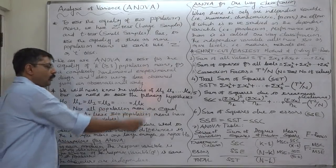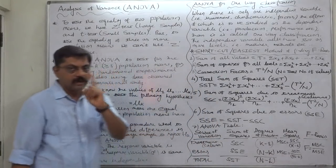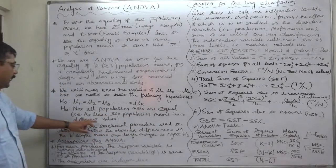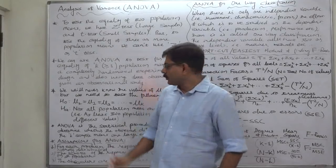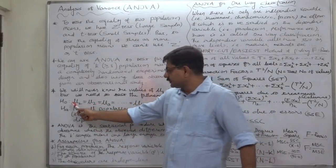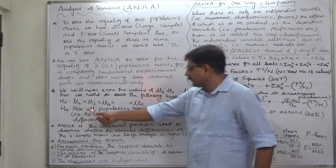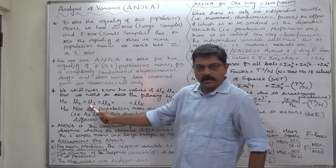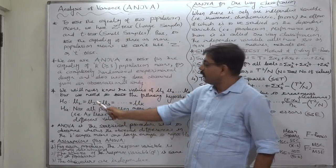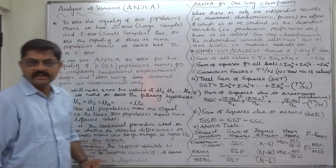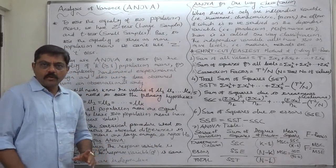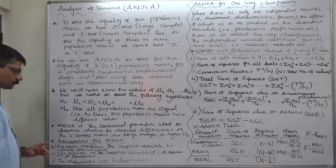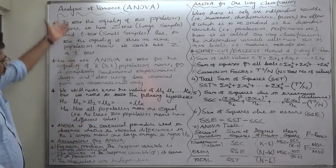On the other hand, the alternative hypothesis will be: not all population means are equal. Mind the words — not all population means are equal — meaning at least two population means have different values. Suppose there are three populations and null hypothesis is mu-one equals mu-two equals mu-three, but alternative hypothesis is not all population means are equal. That means at least two of these three are different: either mu-one and mu-two are not equal, or mu-one and mu-three are not equal, or mu-two and mu-three are not equal. It is not necessary that all the means are different from each other; at least two are not equal.